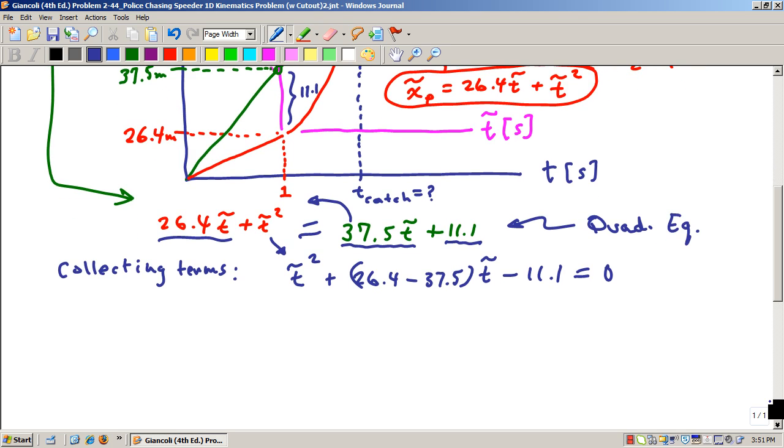And so now we're going to use the quadratic formula. And doing that gives us two roots. We're going to find that T-tilde is equal to on the positive side it's going to be 12.03 seconds.